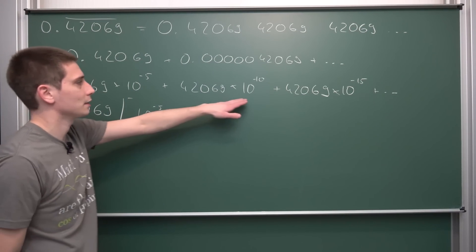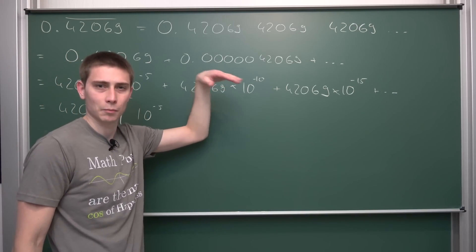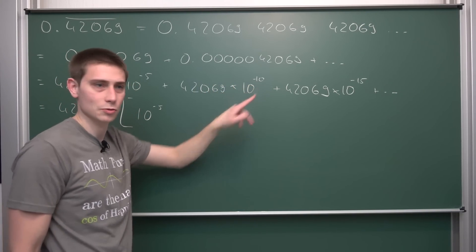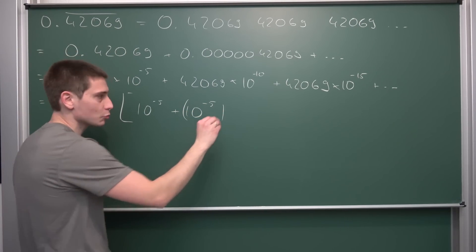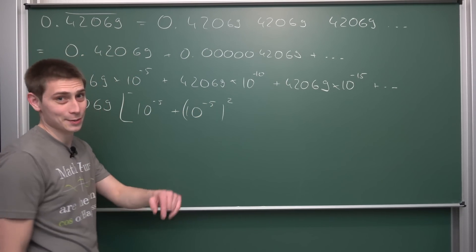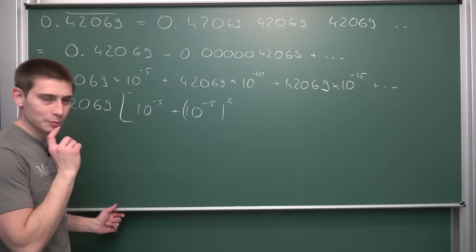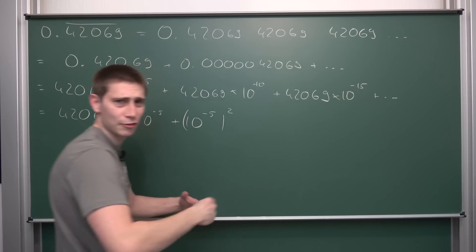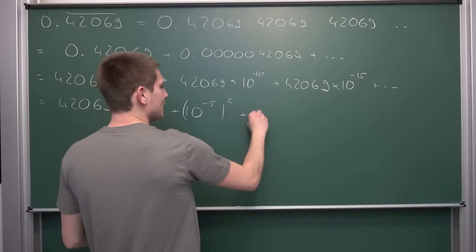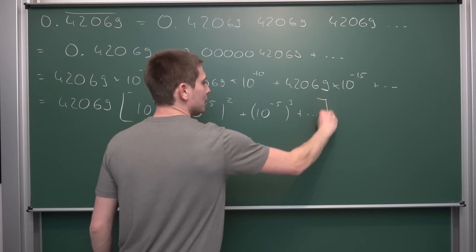Next up, 10 to the negative 10th power—I mean, 10 is nothing but a multiple of 5. 10 is 2 times 5, so this is plus 10 to the negative 5th power, but by the exponentiation rules squared. If you don't know about exponentiation rules, definitely check it out. Now you might guess what next step is—this is nothing but 10 to the negative 5th power to the 3rd power, plus and so on, up until infinity.